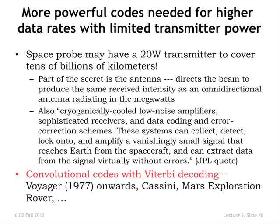As you got more ambitious with these transmissions, you had to go to more complicated codes. These are the codes we're going to talk about today: convolutional codes. We'll talk about the coding today and then the decoding with what's called the Viterbi algorithm next lecture. This has been used extensively from the late 1970s onwards. More recently, you have turbo codes — combinations of convolutional codes and low-density parity check codes, which were developed in Bob Gallagher's PhD thesis here. But convolutional codes were really a workhorse of the whole system.